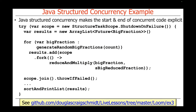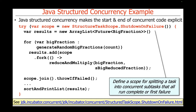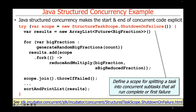Let's take a quick look at an example that makes the starting and ending of concurrent code explicit syntactically. You can find this in the EX3 project in my Loom folder on my Live Lessons GitHub repository. There's a new concept called a structured task scope, with a couple of variants — one that shuts down when everything succeeds, and one that shuts down when the first thing fails. In this case, we're using the shutdown-on-failure model, which defines a scope for splitting one task into concurrent subtasks that either all run to completion or finish at the first failure and throw an exception.